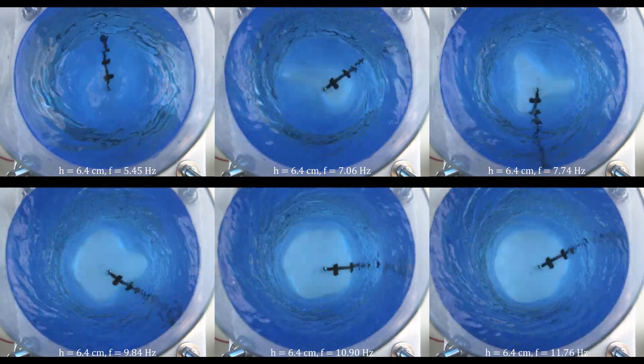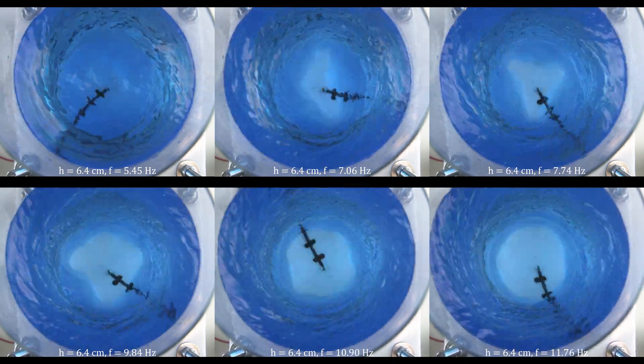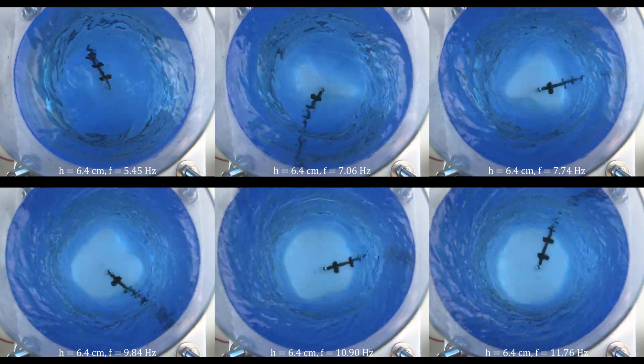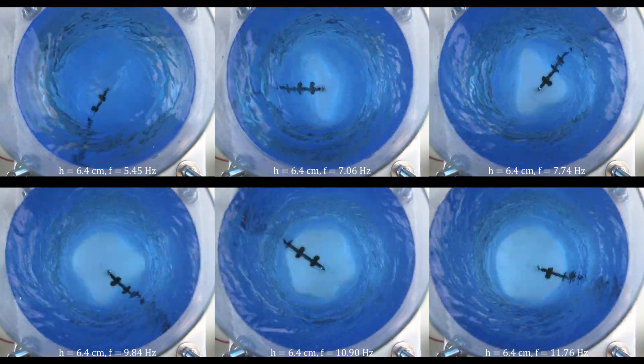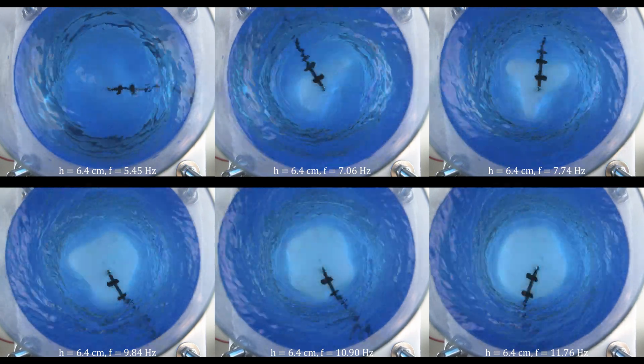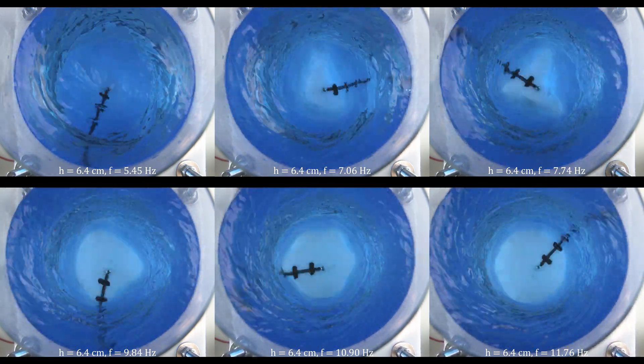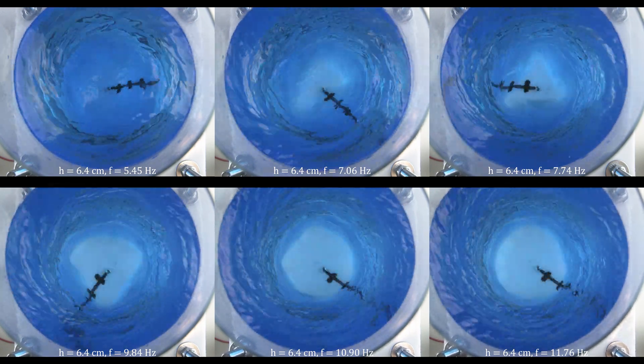Once the dry region is formed, we can observe the polygon. At first, we see an ellipse. Then, as the angular velocity increases, we see a three-corner star. From now on, I'll just call this a triangle. Then a square, then a pentagon, and then a hexagon.